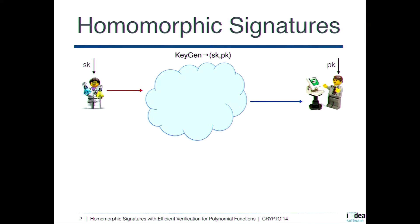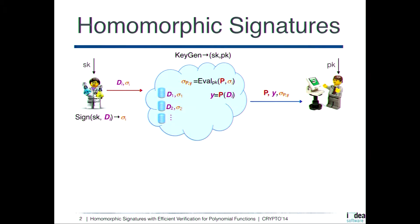Assume that you have two users, Alice and Bob. Alice can use her secret key to sign a bunch of data sets, and these data sets can be stored on some remote server. The amorphous property gives you the following: if the remote server has some function P, it can compute P over the data set to get an output Y, and you can run the evaluation algorithm of the amorphous signature to get a signature on this result Y — done by computing over the signature created by Alice.